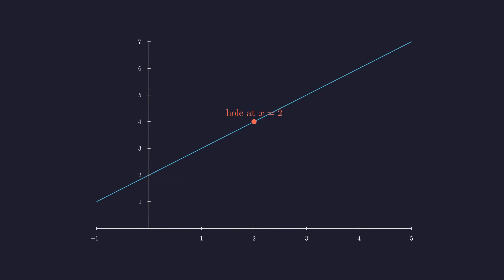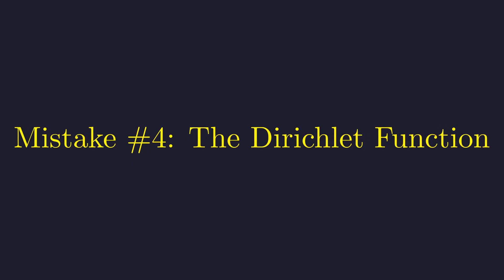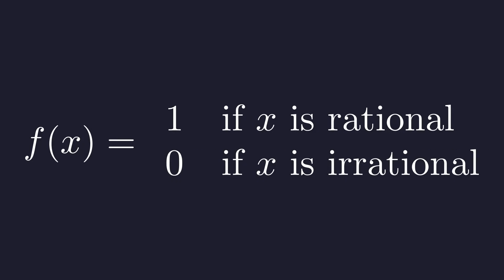What if a function was discontinuous not just at one point, but at every single point? Meet the Dirichlet function. It equals one if x is a rational number and zero if x is irrational. It's impossible to truly visualize. Let's attempt to plot a few points to understand its chaotic behavior. The blue dots represent rational inputs where the function is one.